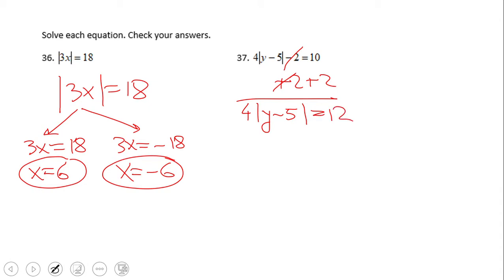The first step was to add two to get rid of that minus two, and obviously now we want to get rid of the four, so we're going to divide by four.